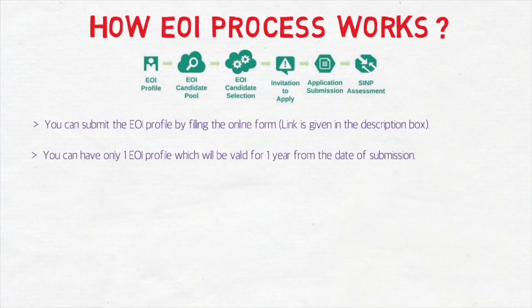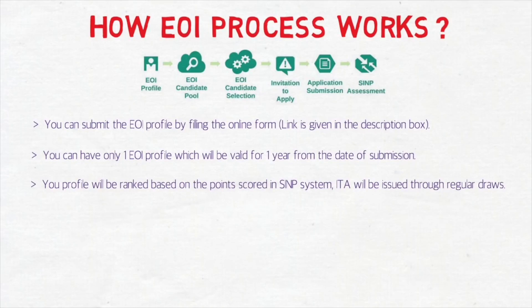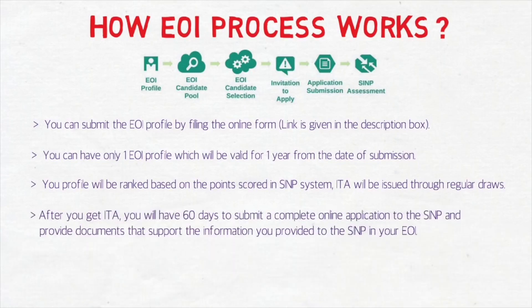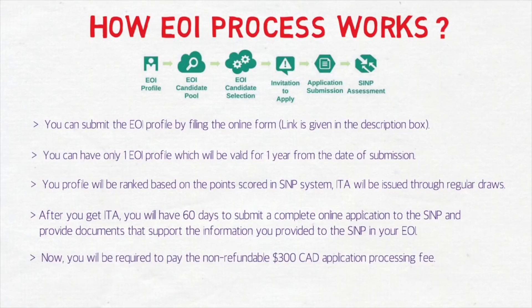You submit the EOI profile by filing the online form. You can have only one EOI profile, which is valid for one year from the date of submission. Your profile will be ranked based on points scored in the SINP system. An ITA will be issued through regular draws. After receiving the ITA, you have 60 days — or two months — to submit a complete online application to the SINP with supporting documents. You will be required to pay a non-refundable $350 application processing fee (as of 2020). Note that this fee is only paid once you receive an ITA, not when you create your EOI profile.